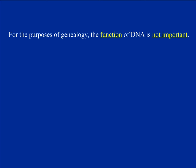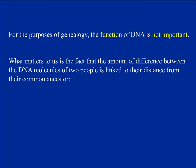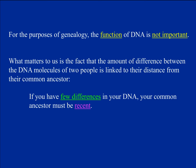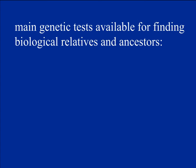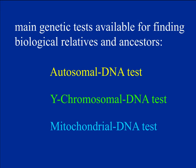For genealogical purposes, the function of DNA is not very important. What is important is that the amount of difference between the DNA sequences of two people tells us whether their common ancestor was very recent or very far back in time. Few differences means a very recent common ancestor; many differences means the common ancestor was further back. There are three main types of genetic tests: autosomal DNA, Y-chromosomal DNA, and mitochondrial DNA.